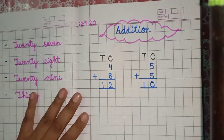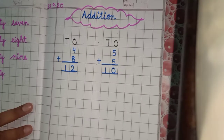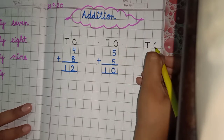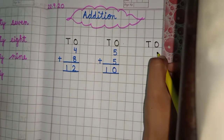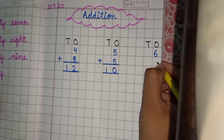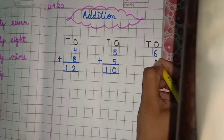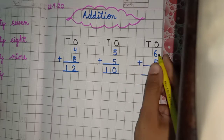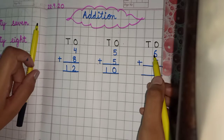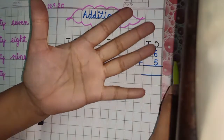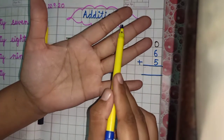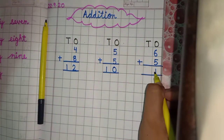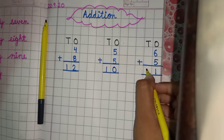Again leave three boxes — one, two, three. Write tens and ones. Write six and five, sign of addition. Six plus five: keep six in mind and raise five fingers — seven, eight, nine, ten, eleven. Write one under the place of ones and one under the place of tens.